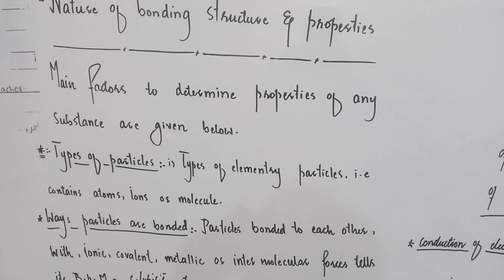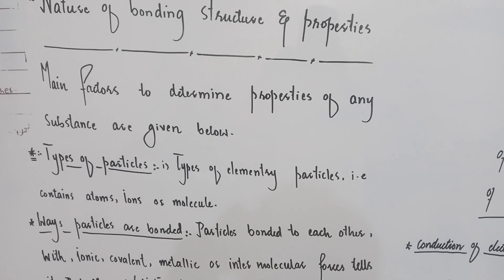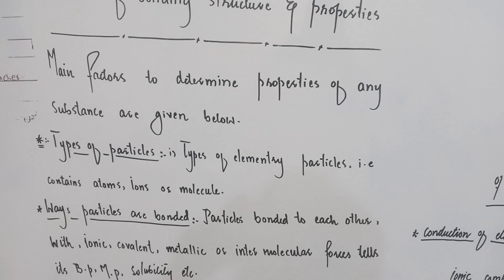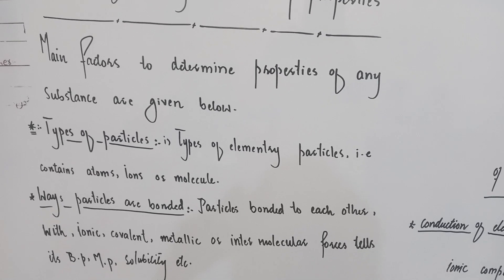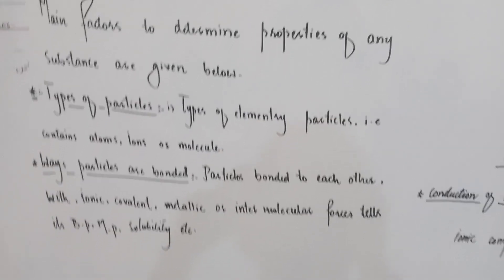Ways particles are bonded: particles bonded to each other with ionic, covalent, metallic or intermolecular forces. This determines properties like boiling point, melting point, solubility, etc.